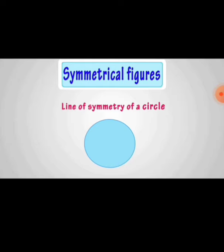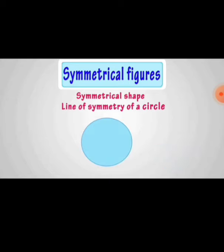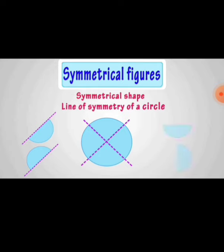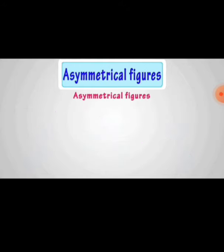A circle is the best example for multiple line of symmetry. A figure can have more than one line of symmetry, which is called multiple line of symmetry. Observe this figure carefully and the line of symmetry. Observe the circle — it has more than one line of symmetry, so this is called multiple line of symmetry.